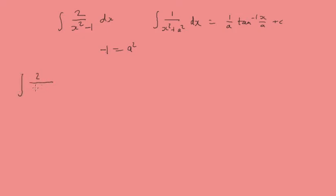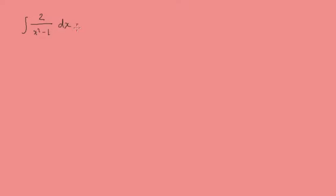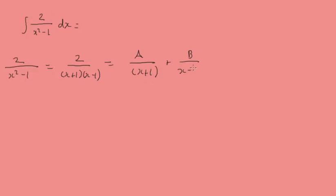Let's look at this function in more detail. If you look at x squared minus 1, that can be written as x minus 1 multiplied by x plus 1 — we can factorise it. Then we have a problem we can solve using partial fractions. So this is now 2 over (x+1)(x-1), and we can write this as A over x plus 1 plus B over x minus 1. Multiplying through, we get 2 equals A(x minus 1) plus B(x plus 1).